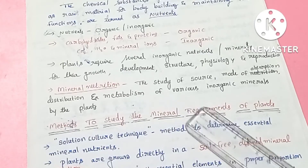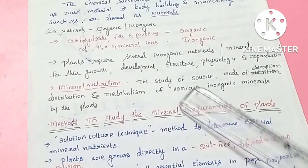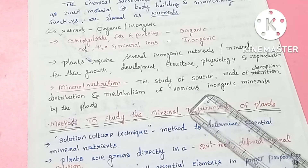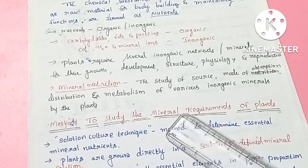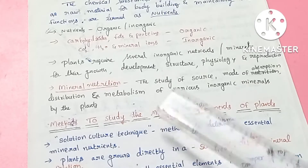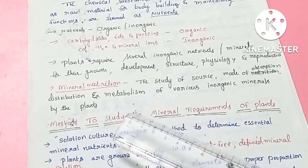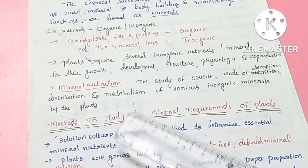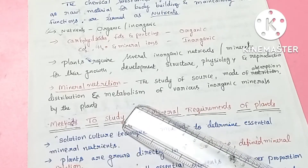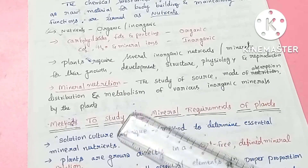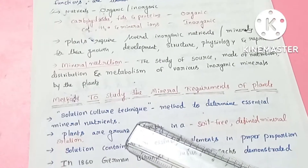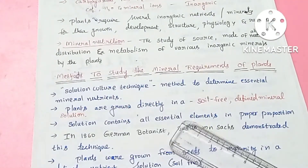What is mineral nutrition? The study of the source, distribution, absorption, metabolism and various roles of inorganic minerals of a plant is called mineral nutrition. There are several methods to study the mineral requirements of plants.